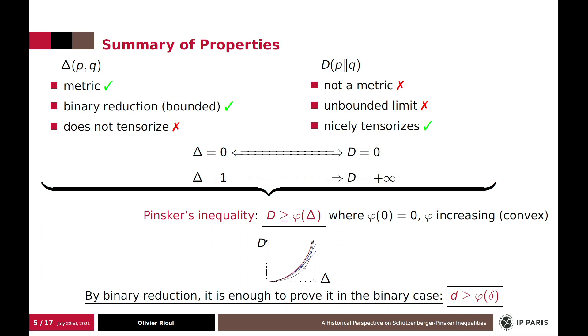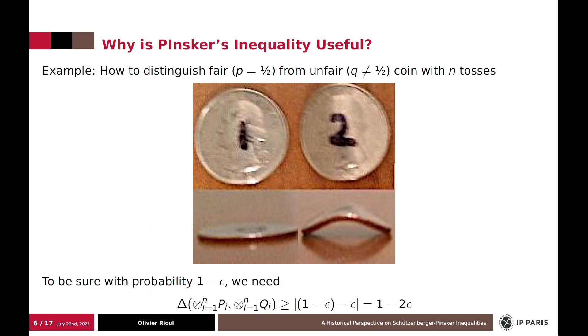And also, using binary reduction, it is very easy to see that it is enough to prove Pinsker inequality in the binary case. Because delta can already be defined for binary partitions. And D can only increase by sub-partitioning.